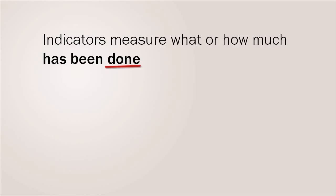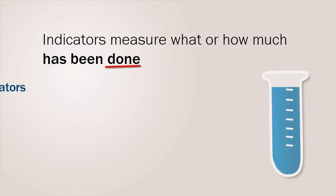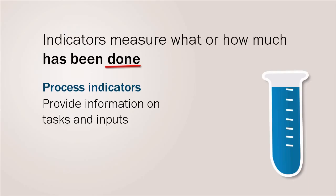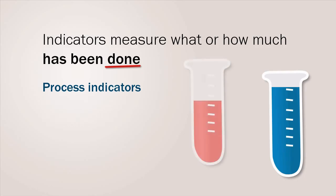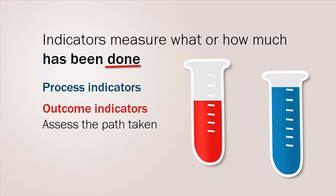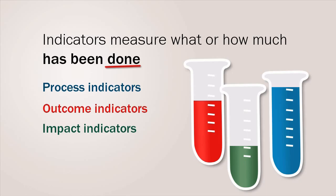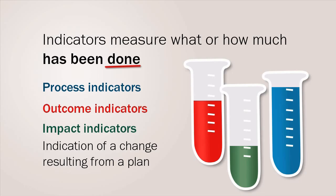Indicators measure what or how much has been done. Process indicators provide information on tasks done and inputs consumed as part of activities to achieve objectives. Process indicators are collected regularly, on a weekly, monthly or quarterly basis. Outcome indicators are used during a project to assess if the path taken is working well and if changes need to be made to the plan's objectives; these are collected over longer intervals, once or twice a year. An impact indicator is an indication of change that has resulted from a plan. Impact indicators are collected and reported on at the end of a project, after objectives have been completed.